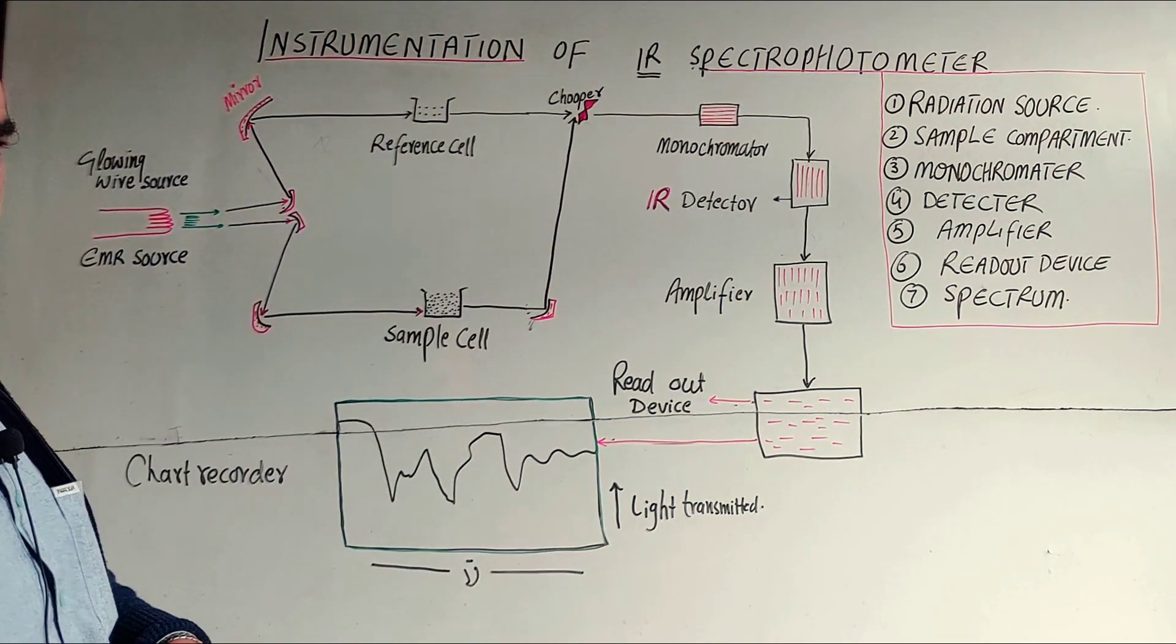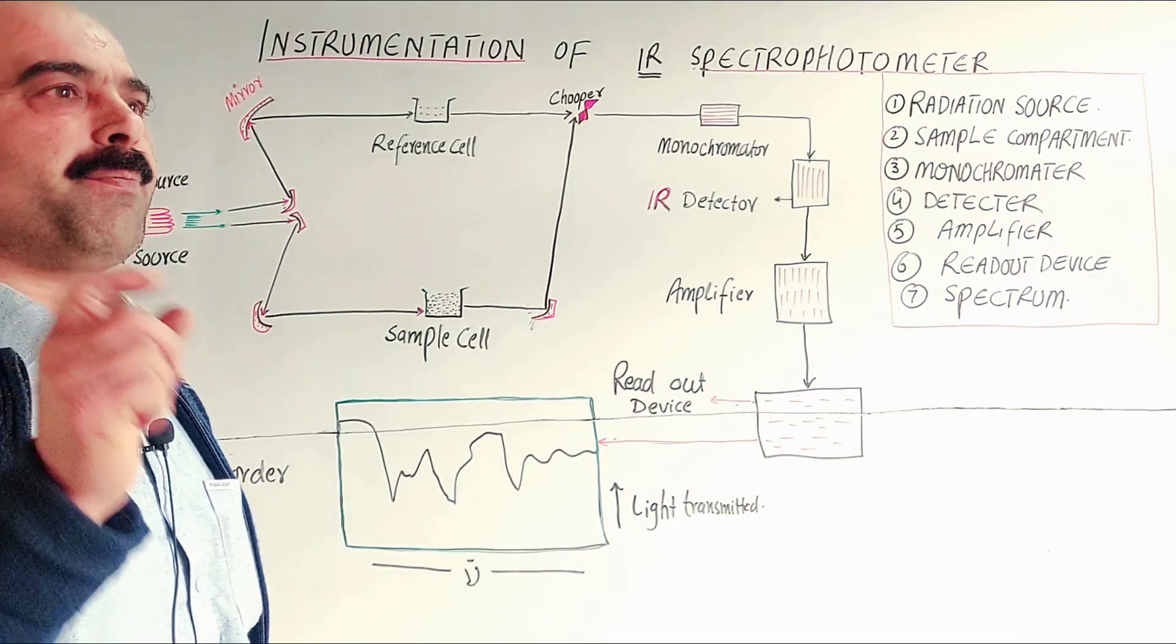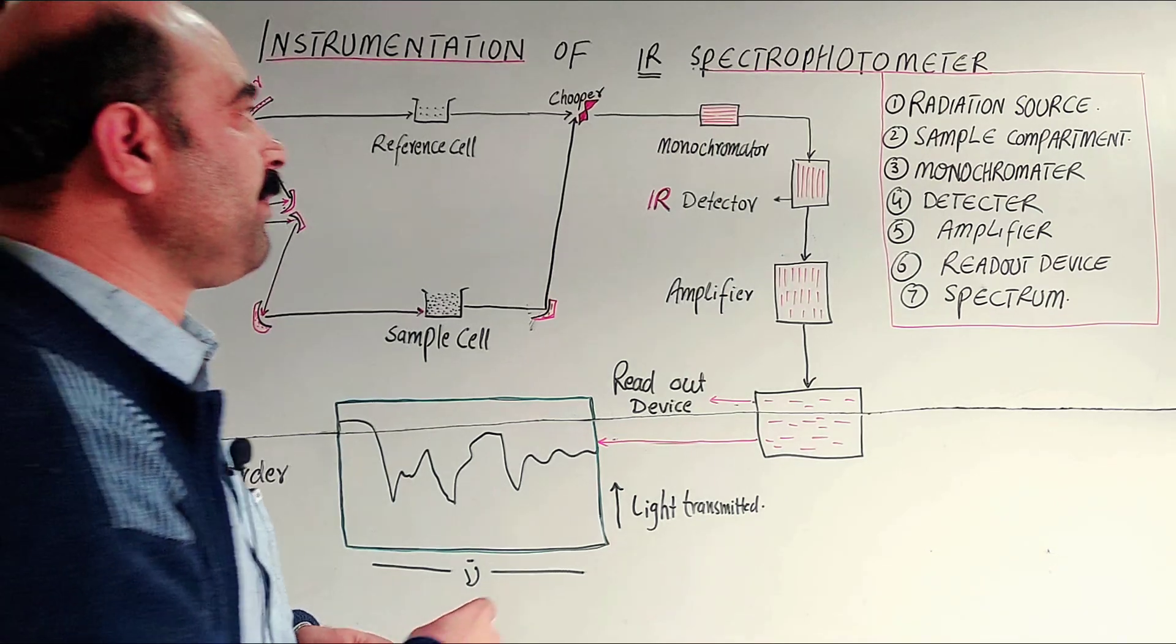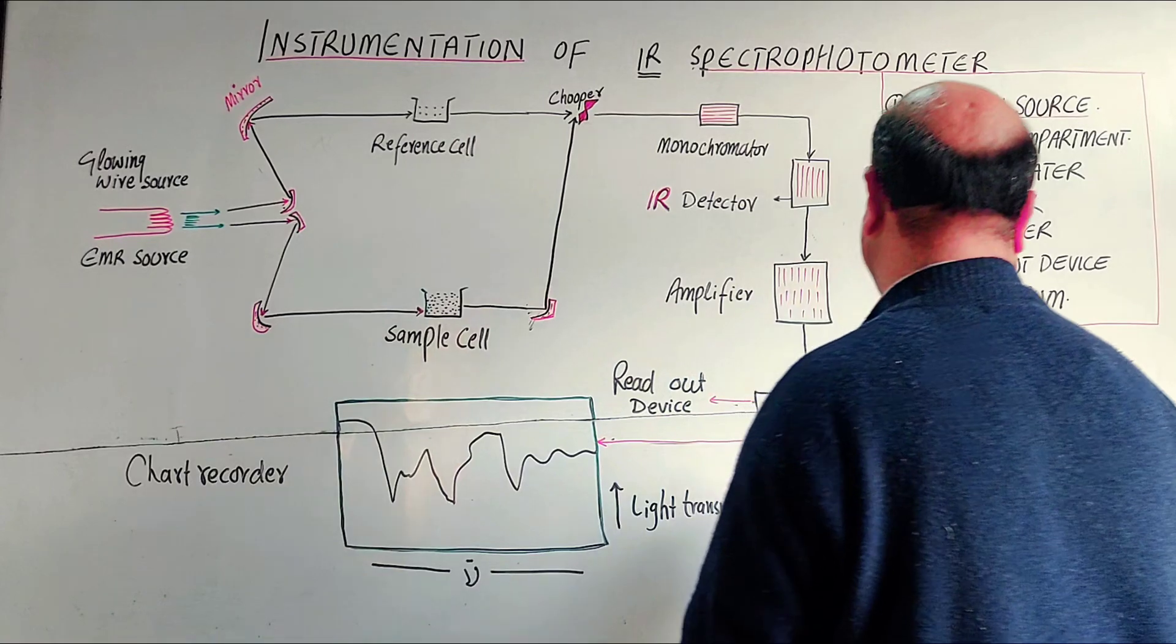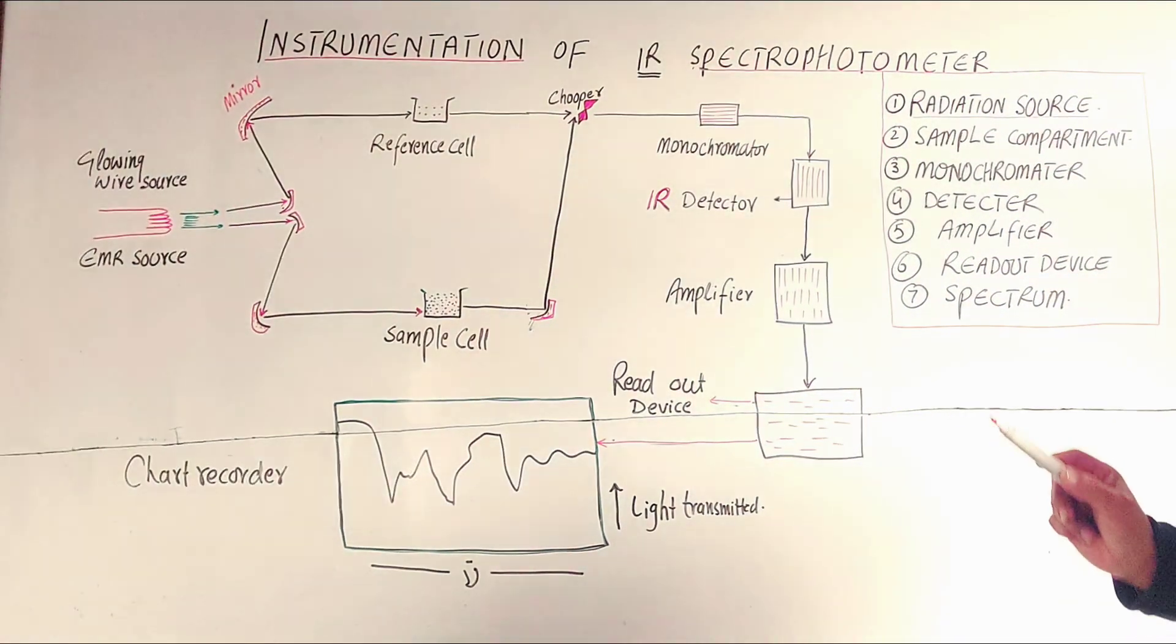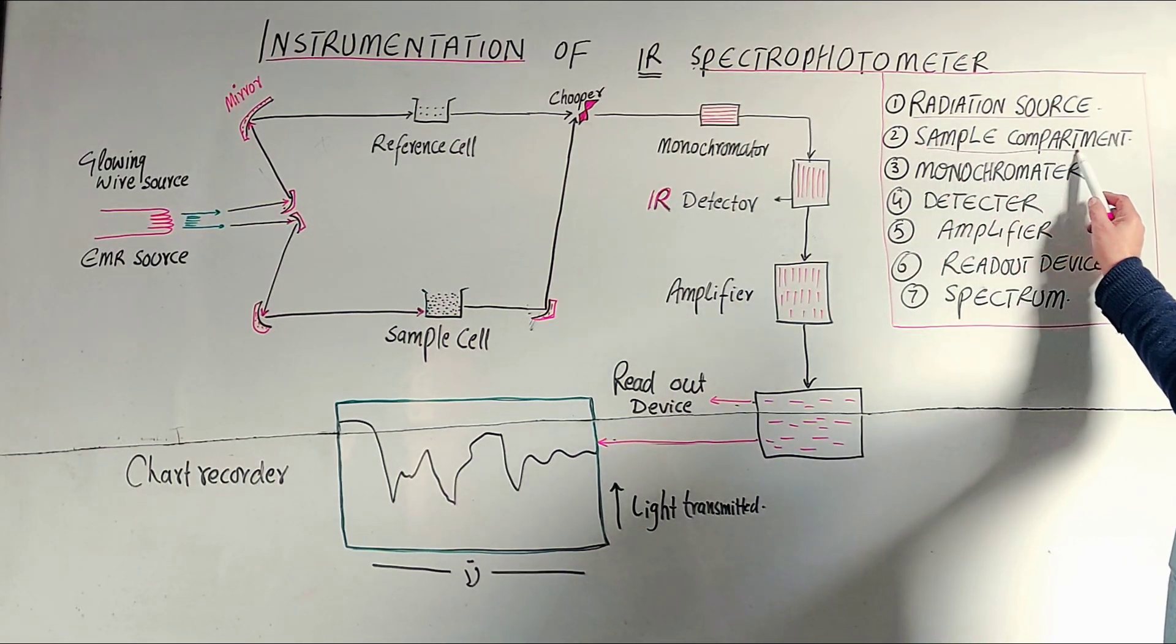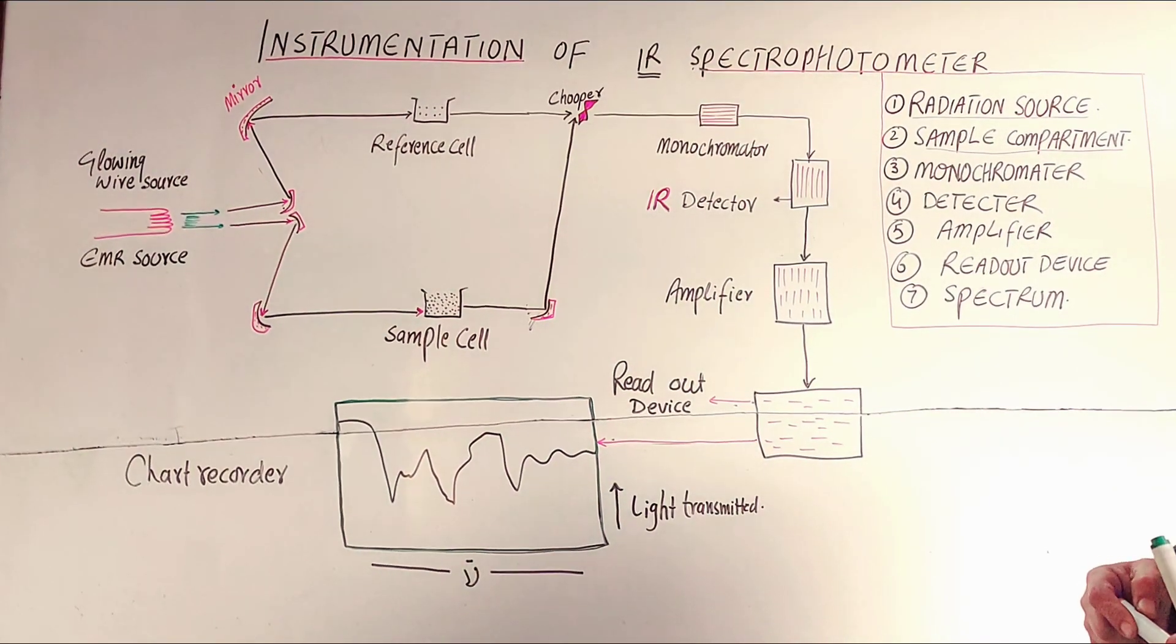The main parts, the main components of IR spectrophotometer are: first one is a radiation source, the source from which IR radiations emit, then the sample compartment where the sample is placed, the organic sample.